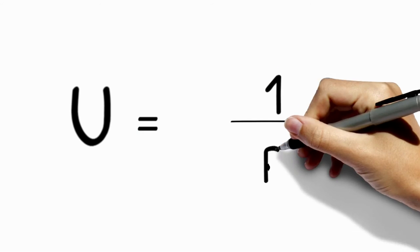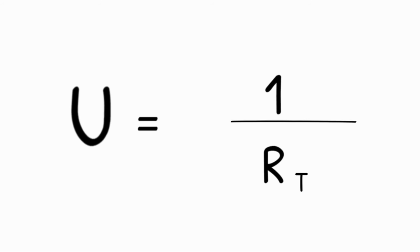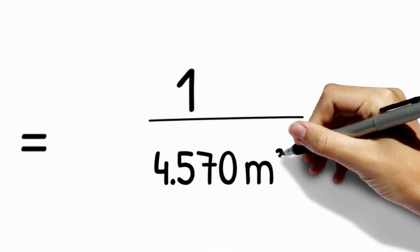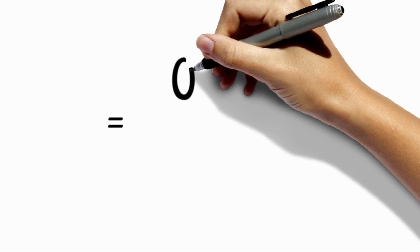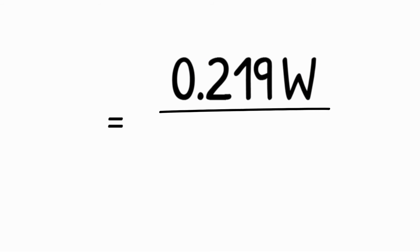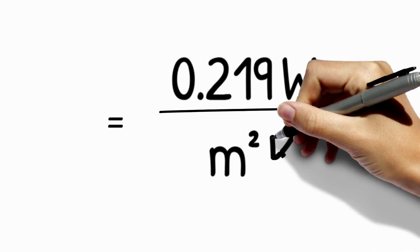The U-value is the inverse of the total resistance, and in our case, the inverse of 4.570 square meter k over watt. The result of this division is 0.219 watt over square meter and k, which is our result.